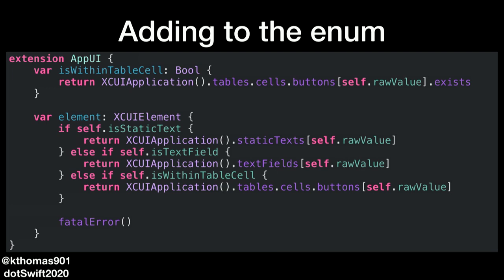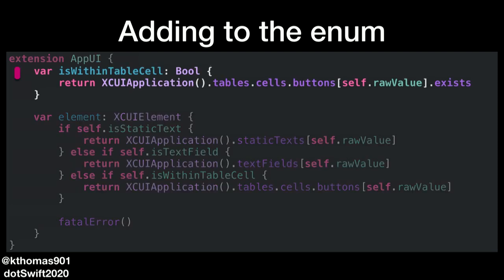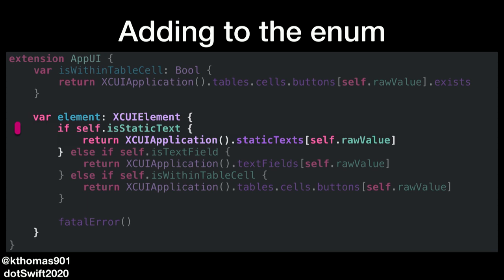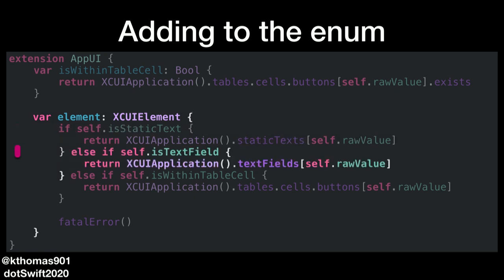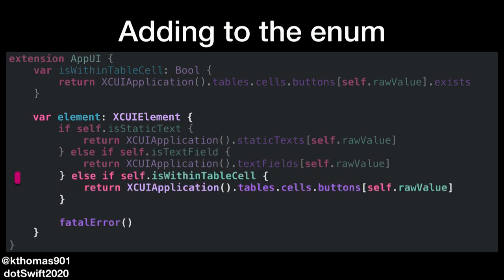Let's add extensions to our enum. First, we add a computed variable that checks if the current element is within a table cell. Since this app is written in SwiftUI, the list view cells are actually buttons. So this looks at all tables on the current screen, the cells within that table, and searches buttons within those cells. And to actually interact with those elements, we need to return the XCUIElement. We'll do this for each computed variable: static text, text field, and our newest variable isWithinTableCell. We include a fatal error because in this simple app, those are the three main elements, though in a larger app you'd cover more cases.